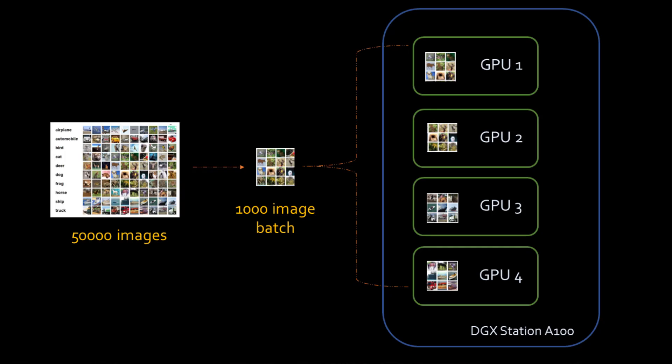I'm going to show you how you can use TensorFlow MirroredStrategy to perform distributed training on a multi-GPU system. I have an NVIDIA DGX which has four GPUs and I'm going to be doing image classification for a small image dataset. We have a total of 50,000 images and we'll be building a neural network. We will split all these images into batches of a thousand and distribute those to the four GPUs.